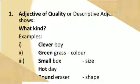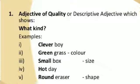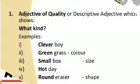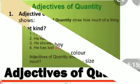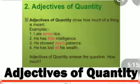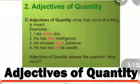Number 1: Adjective of quality. These show what kind of a thing or noun. Next is adjective of quantity. They show how much of a thing is meant.